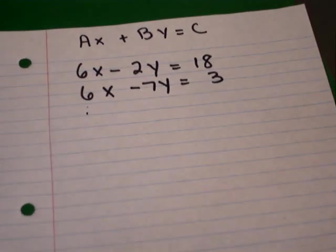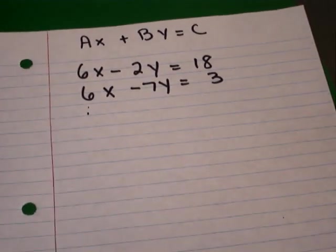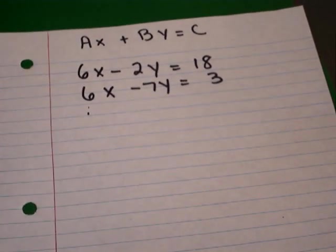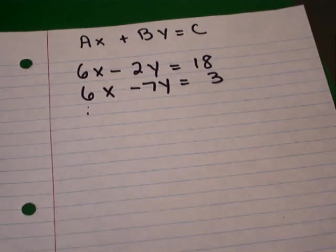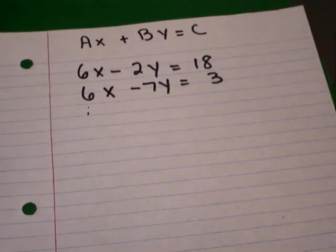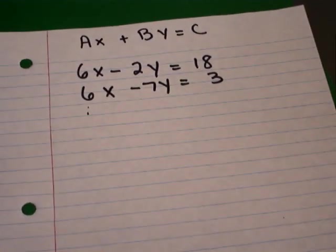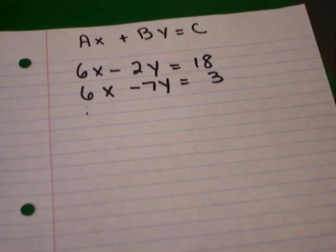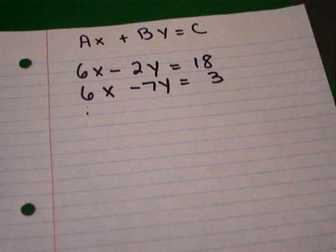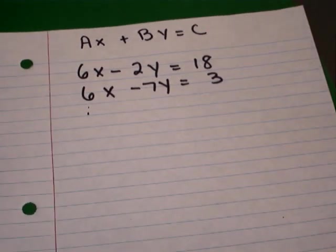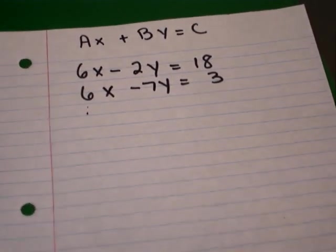Hi, my name is Raul, and this is part two of System of Linear Equations, solving by using the elimination method. On this example, we have two equations: 6x minus 2y is equal to 18, and 6x minus 7y is equal to 3.